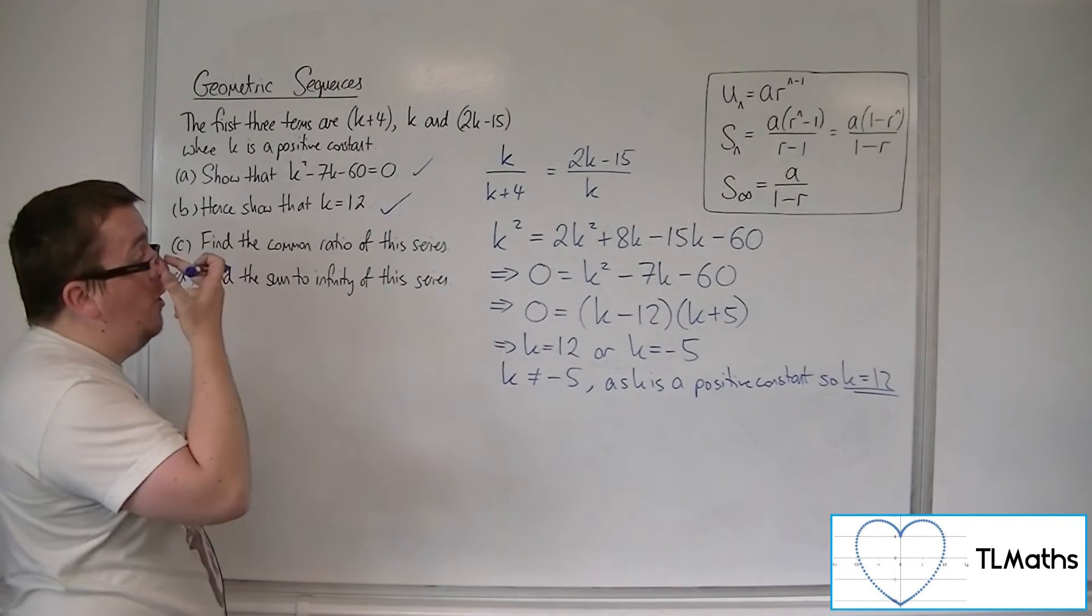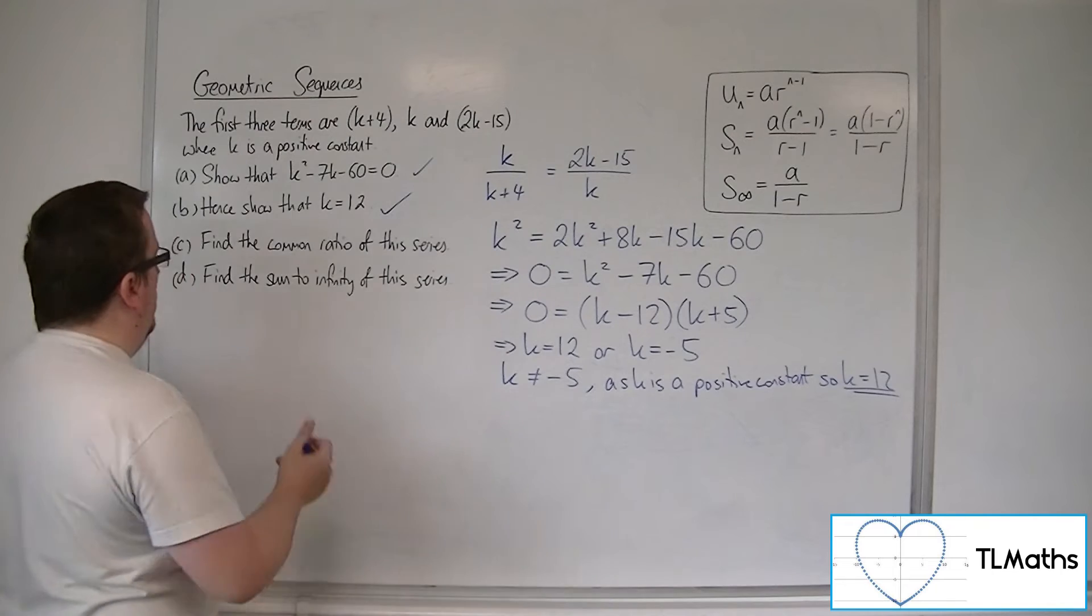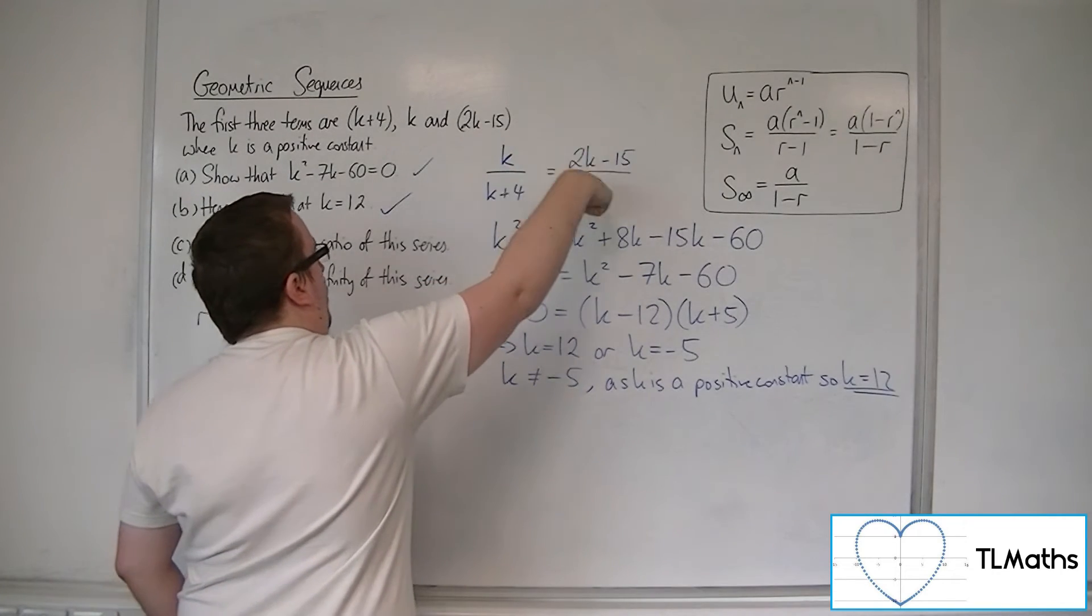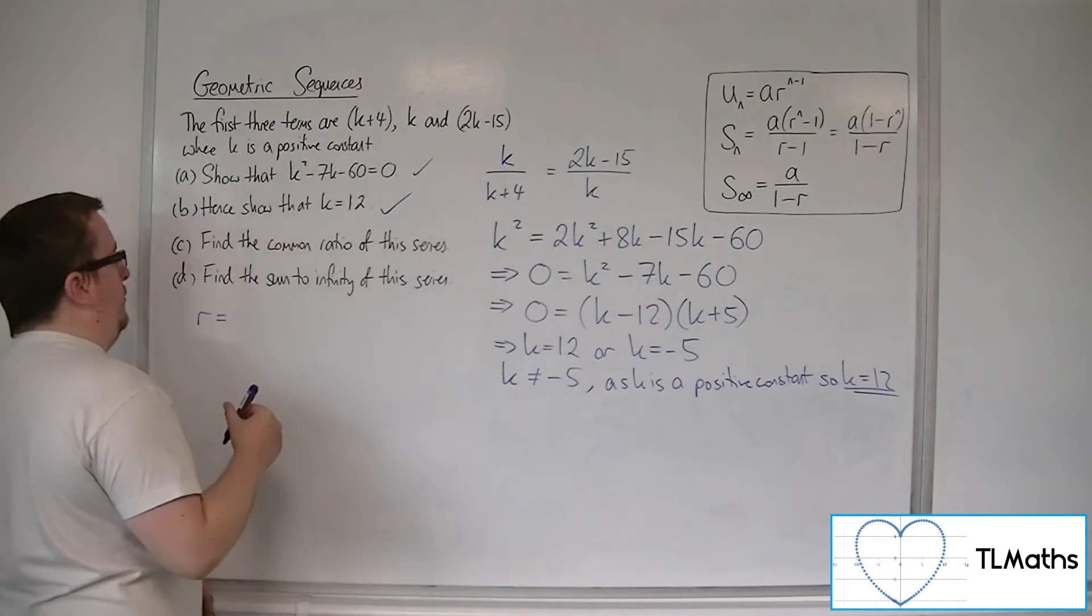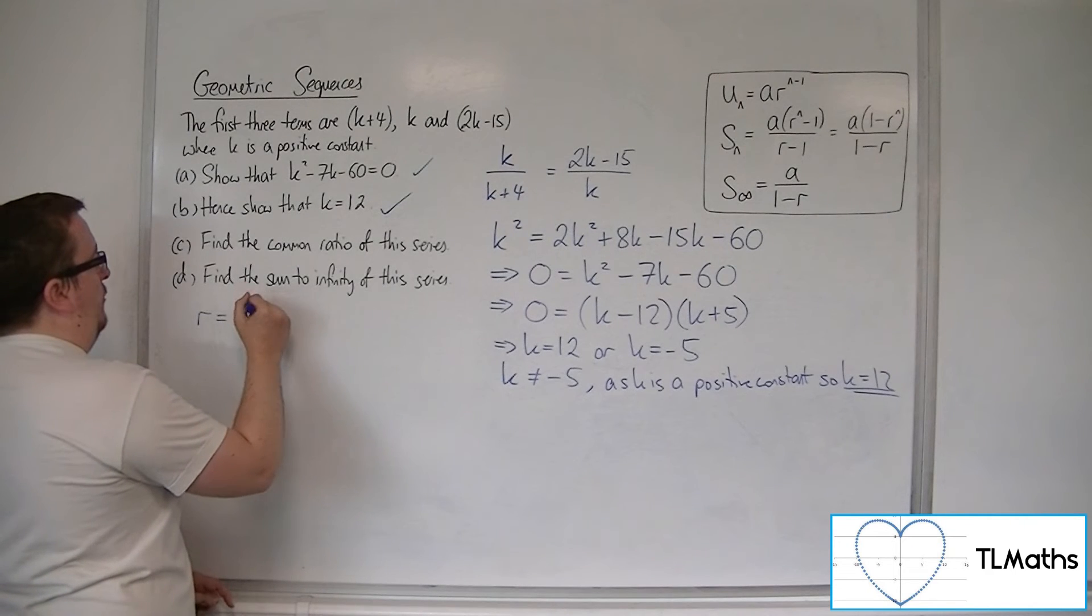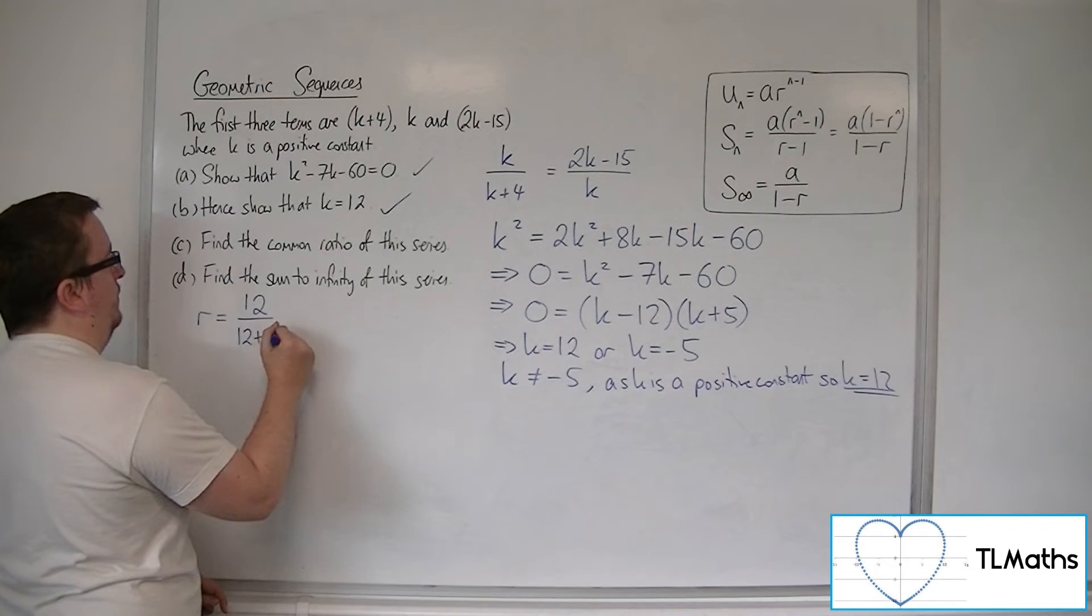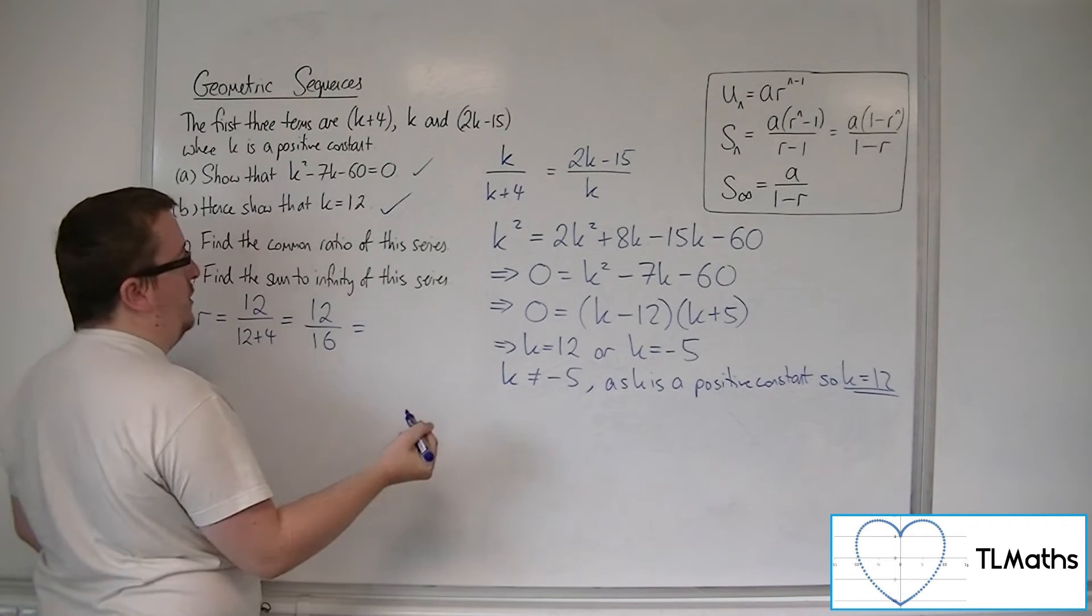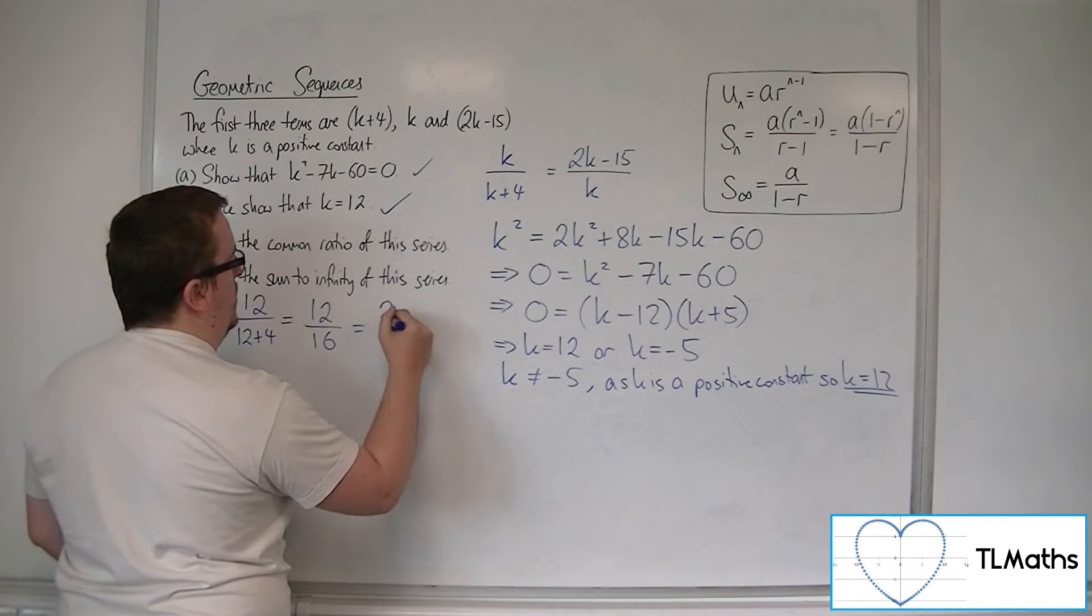Part C. Find the common ratio of this series. Well, we know that we could either use that or that. I'm going to use the first one. So r is equal to 12 over 12 plus 4. So 12 over 16, divide top and bottom by 4, we get 3 quarters.